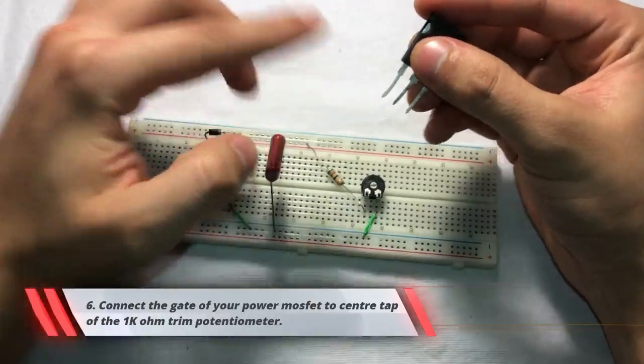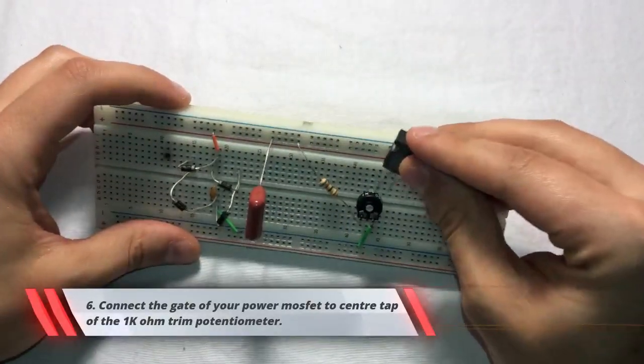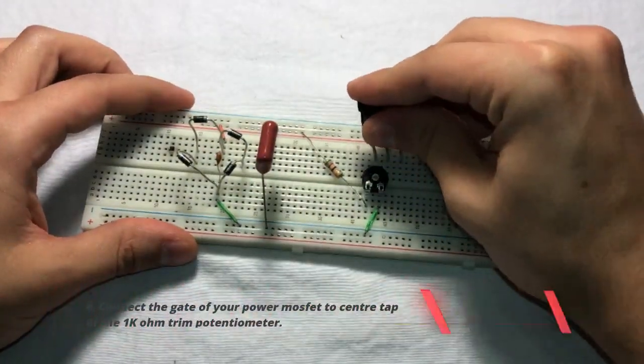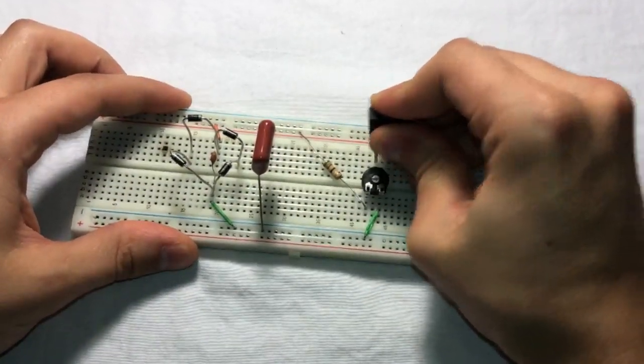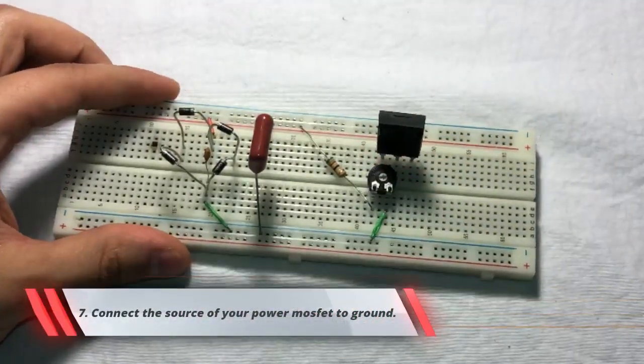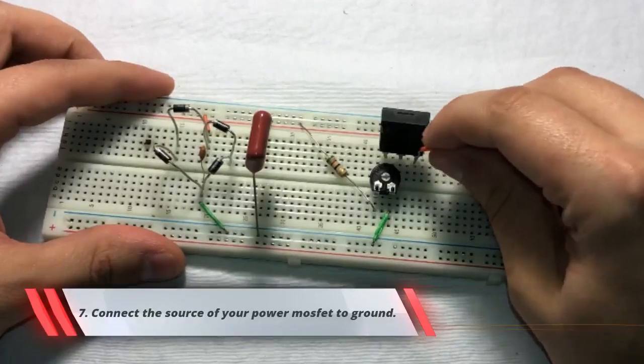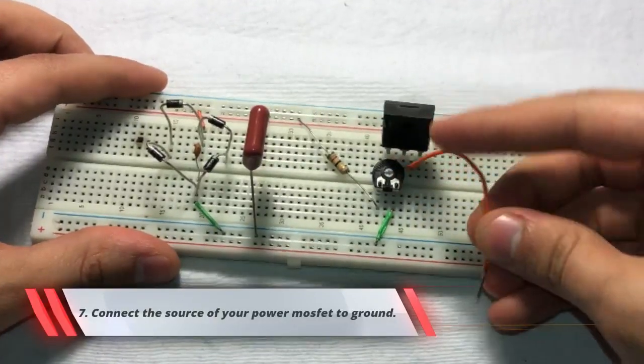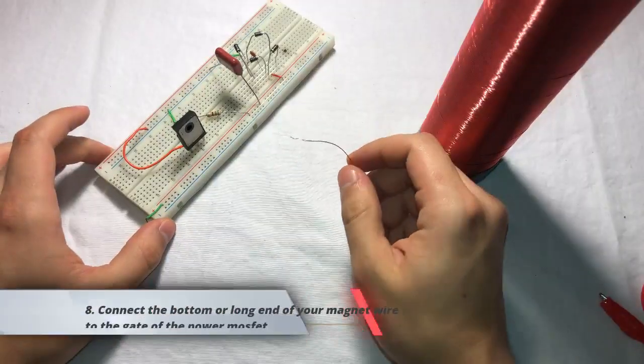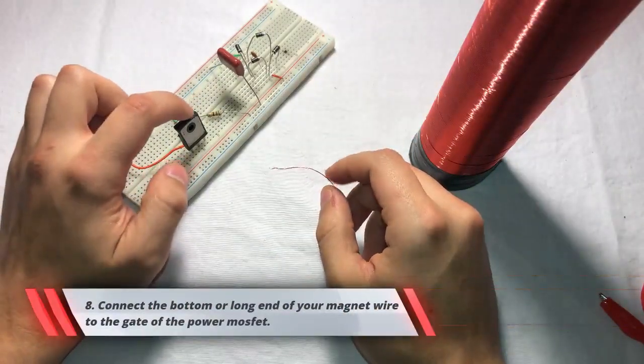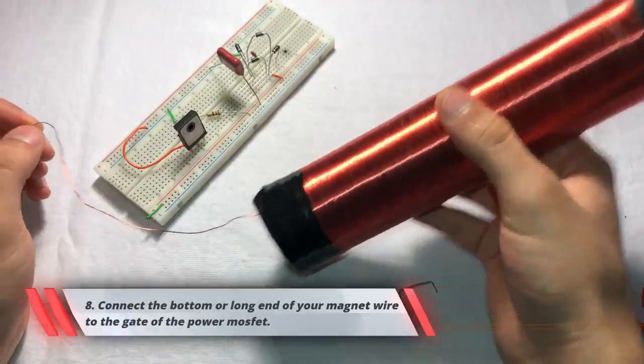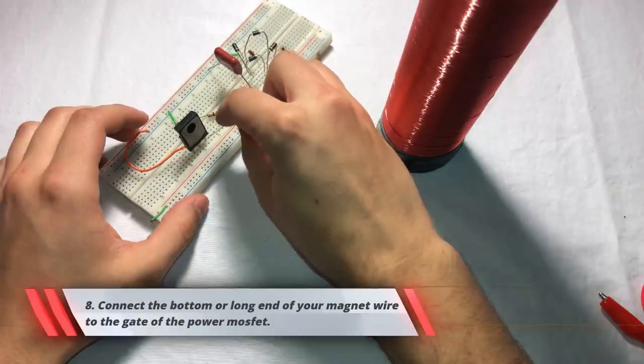So the gate of our MOSFET is going to connect to the center tap of the trim potentiometer. So that's going to go in there. A little bit of a tight fit there. And the source of our MOSFET is going to get connected to ground like that. So now also connected to the gate of our power MOSFET is the long end of the coil that we just wound. So I'm just going to plug that in there.